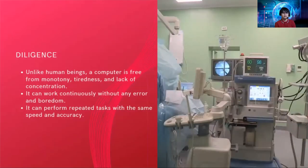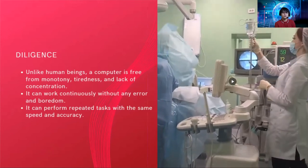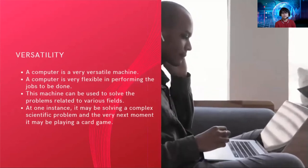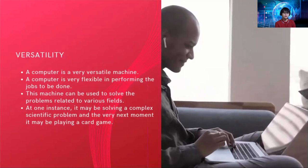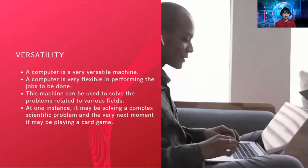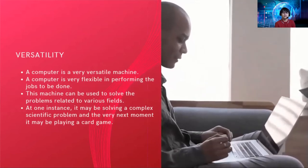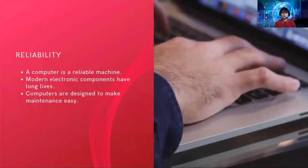Next is diligence. Unlike human beings, a computer is free from monotony, tiredness, and lack of concentration. It can work continuously without any error or boredom, and can perform repeated tasks with the same speed and accuracy. Next is versatility. A computer is a very versatile machine, very flexible in performing jobs. At one instance it may be solving a complex scientific problem, and the very next moment it may be playing a card game — computers can do multitasking unlike human beings.